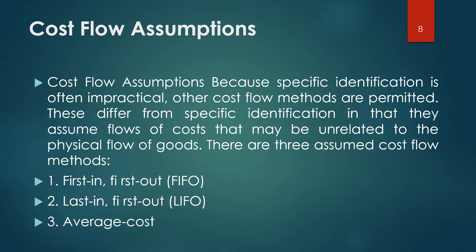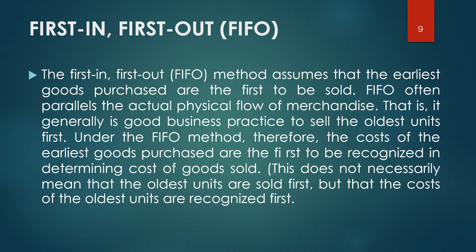The three assumed cost-flow methods are: 1) First-in, First-out (FIFO); 2) Last-in, First-out (LIFO); and 3) Average Cost. The FIFO method assumes that the earliest goods purchased are the first to be sold. FIFO often parallels the actual physical flow of merchandise — it is generally good business practice to sell the oldest units first. Under FIFO, the costs of the earliest goods purchased are the first to be recognized in determining cost of goods sold.